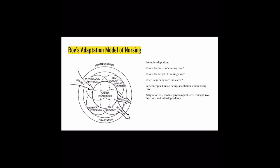Role function involves people's adaptation to different roles in their life — for example, a new mother and her baby, or someone who has just got a new job. Interdependence involves relationships with other people. According to Roy, nurses are to promote healthy adaptation in these four modes.